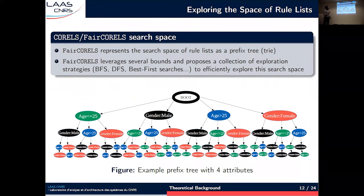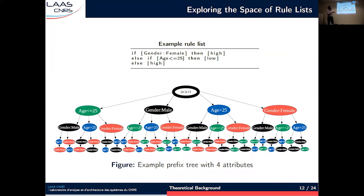Fair Corels represents the search space of rule lists using a prefix tree. Here you have an example prefix tree for a dataset with four attributes, where each attribute corresponds to a color in the tree. Fair Corels uses different bounds and exploration heuristics to explore this search space efficiently. Each node in the prefix tree corresponds to a prefix: if you take the path from the root to a node, it defines a prefix, and if you add a default prediction, it defines a rule list. For example, a rule list with the first rule having antecedent 'gender female' and second rule 'age less than or equal to 25' corresponds to a specific node in this tree.